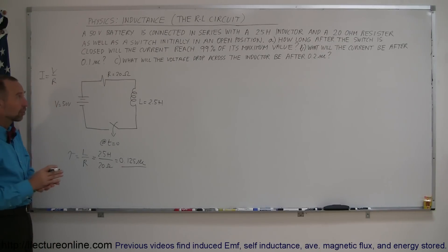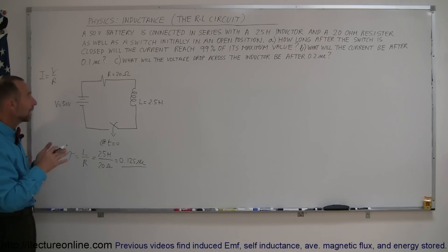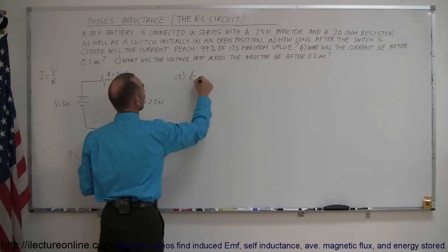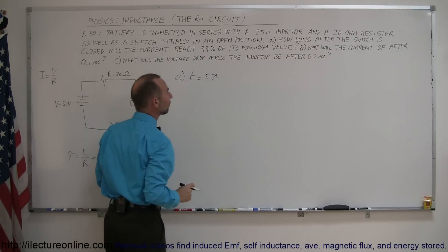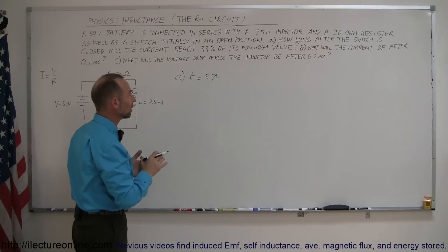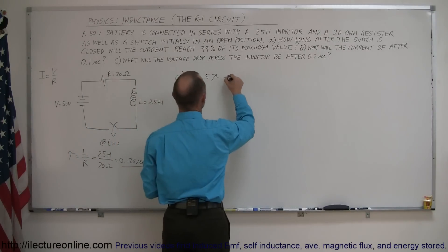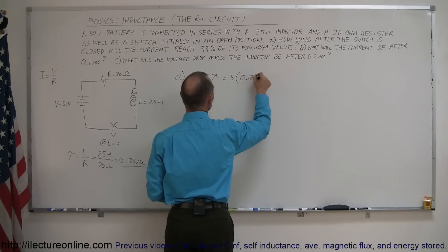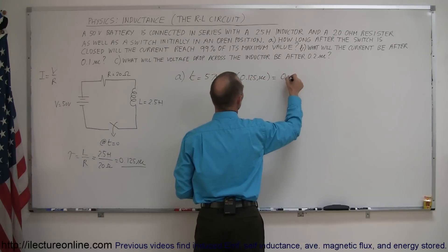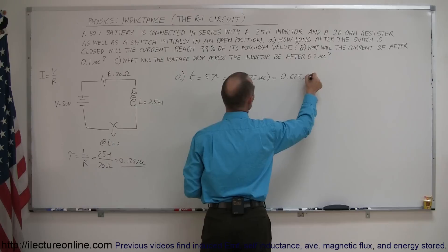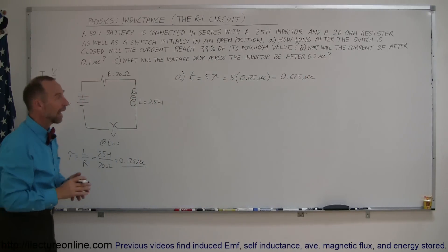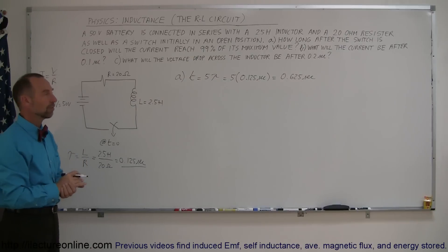Just like with capacitors, the time it takes for the current to reach 99% of its final value takes five time constants. So for part A, T equals five time constants = 5 times 0.125 seconds, which equals 0.625 seconds. So it takes a little bit over half a second for the current to reach pretty well its maximum value.